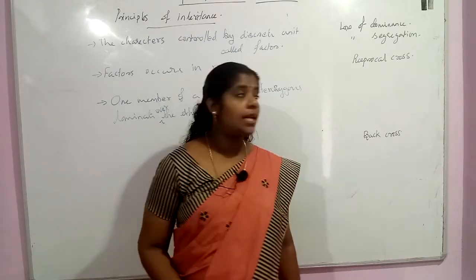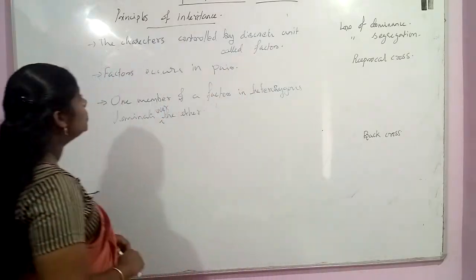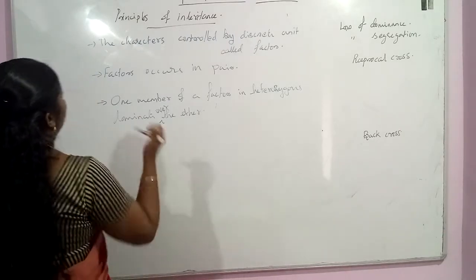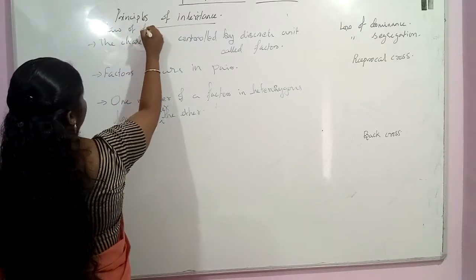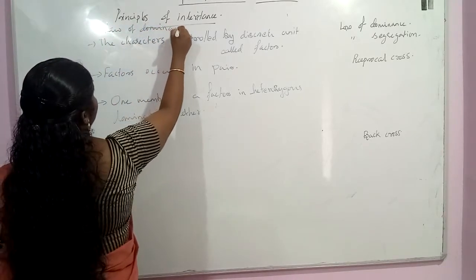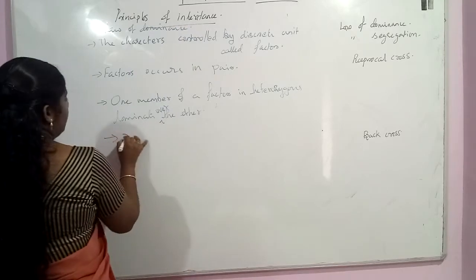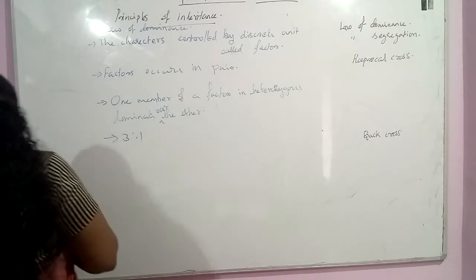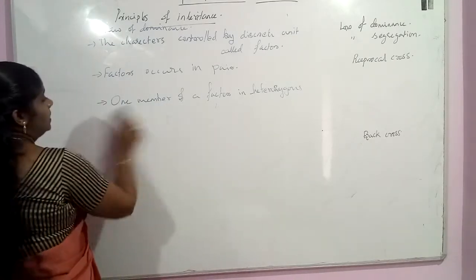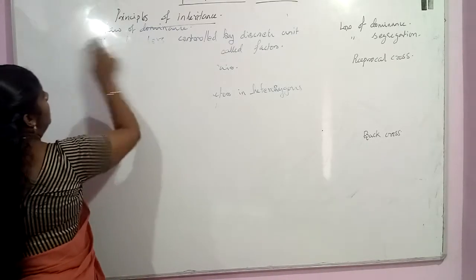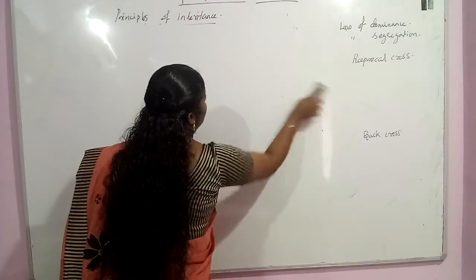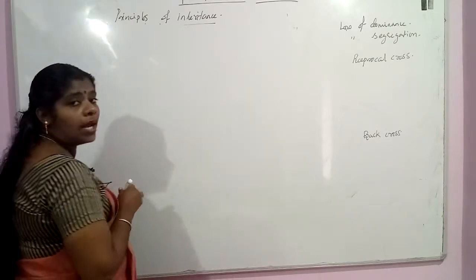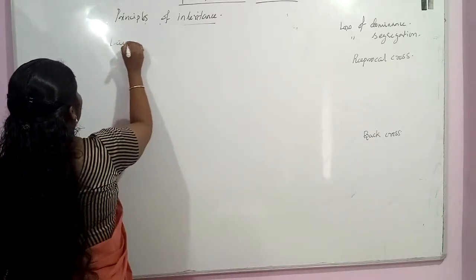Next is the law of segregation. The law of dominance is the first law of Mendelian inheritance, and the law of segregation is the second law of Mendelian inheritance.